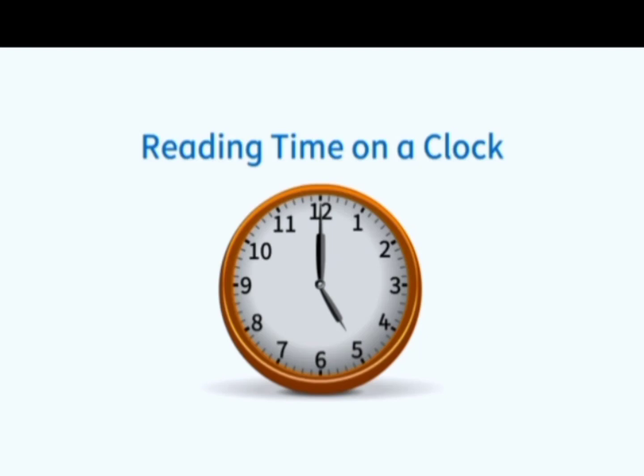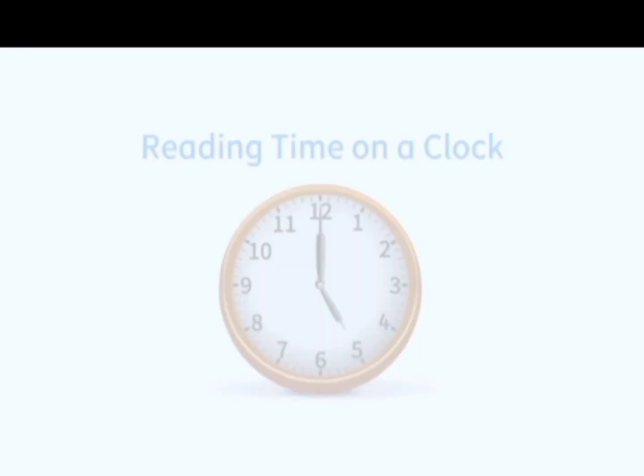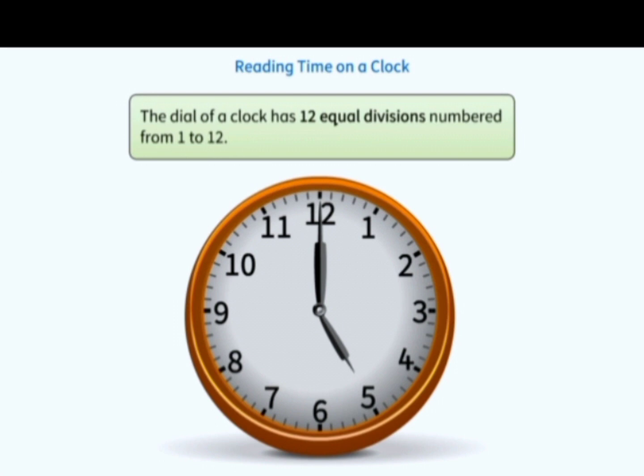Let's look at how to read the time on a clock. The dial of a clock has 12 equal divisions numbered from 1 to 12.